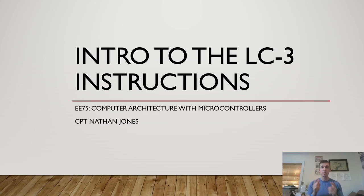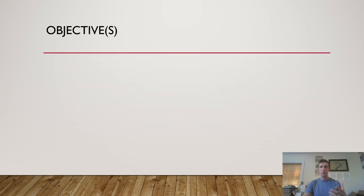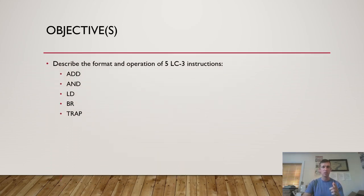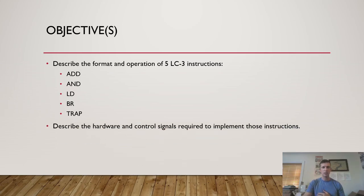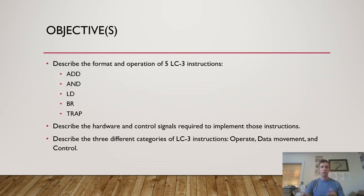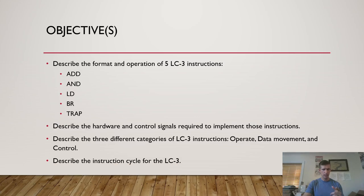Hey folks, this is Captain Jones here to give you an introduction to the LC3 instructions. We're finally going to start learning what sorts of things our computer is capable of. Our objectives today are: number one, to describe the format and operation of five instructions. We'll talk about each one in detail, then describe the hardware and control signals required to implement those instructions using the data path we just learned about. Lastly, we're going to discuss the three different categories of LC3 instructions — operate instructions, data movement, and control instructions — and talk about the instruction cycle.